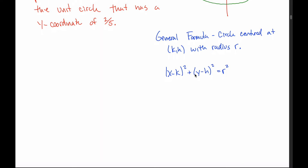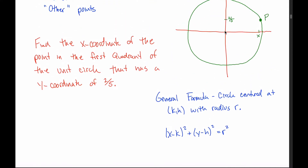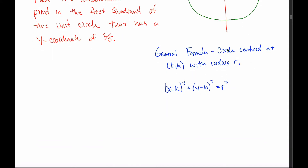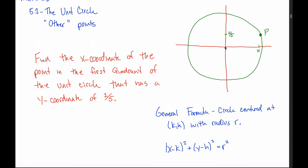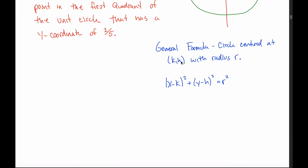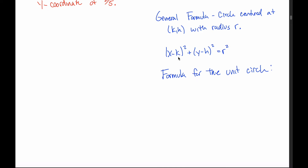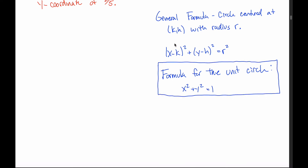To do that, you have to think back to the equation of a circle. The general formula for a circle centered at point (h, k) with radius r is the standard form. But the circle we're studying is the unit circle, which is the nicest circle — it's centered at the origin, so h and k are both 0, and the radius is 1. Substituting those values in, x minus 0 squared is just x squared, y minus 0 squared is just y squared, and 1 squared is just 1.